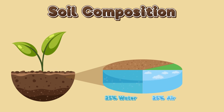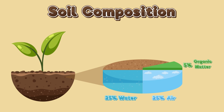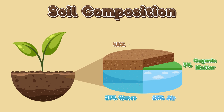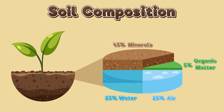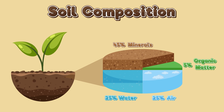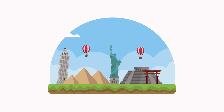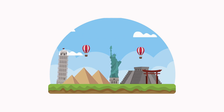Soil is very important to plants, animals and humans. It provides nutrients for plants to grow. Many animals live in or on the soil. Humans use soil to grow food crops and build foundations for houses or roads.